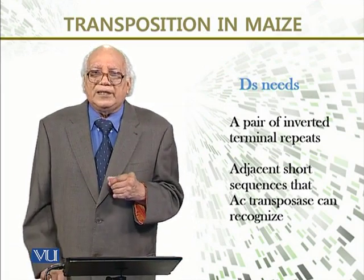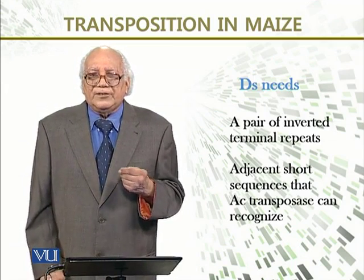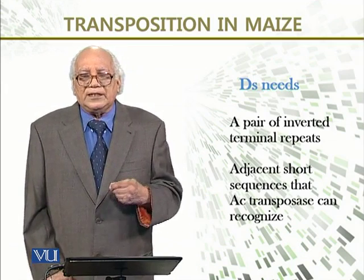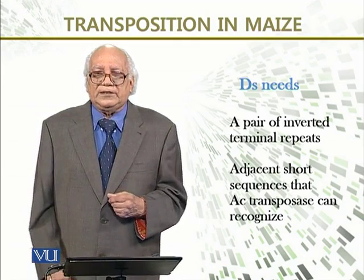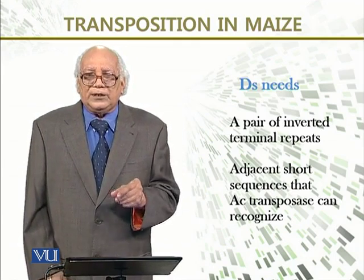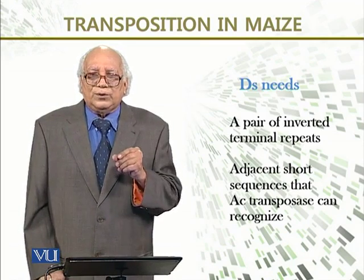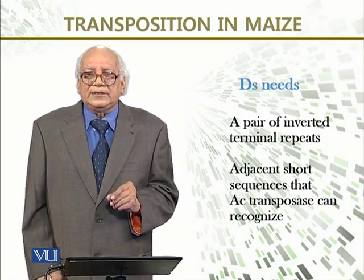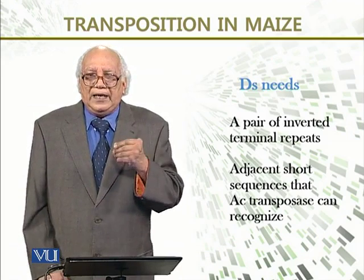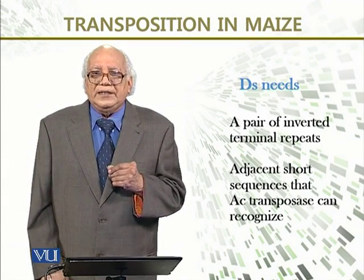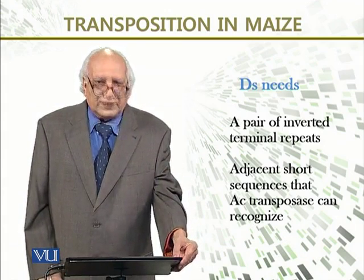The Ds or Dissociation element requires a pair of inverted terminal repeats, as we have studied before, and adjacent short sequences. These adjacent short sequences are needed so that the activated transposase can recognize them and begin functioning.